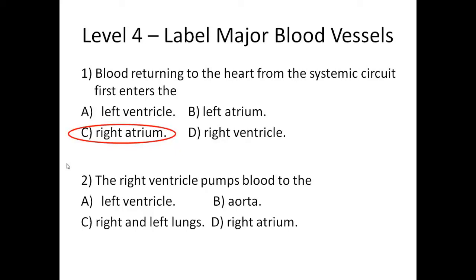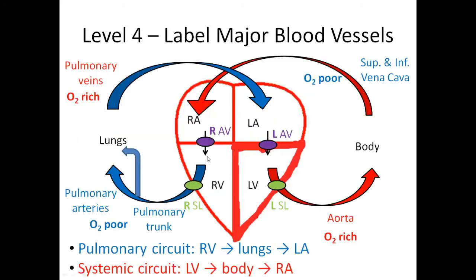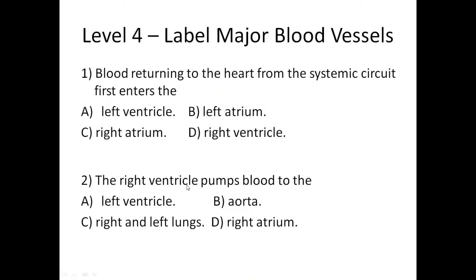Question two: the right ventricle pumps blood to... Go back to the diagram — the right ventricle pumps out through the right SL valve and over to the lungs. Also worth noting: there are valves between chambers, so going from atrium to ventricle you cross a valve, and when leaving the ventricles there's a valve. But there isn't a valve when you first enter the heart. The answer is the lungs.